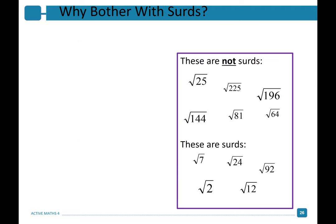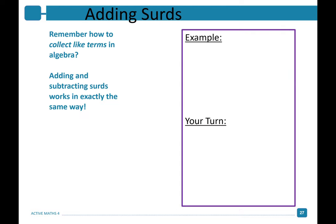Let's look at the following values. Root 25, root 144, square root of 81, square root of 64, the square root of 196 and the square root of 225 are not SURDs — these are all called perfect squares, as all of them can be written as a whole number. Whereas root 7, root 24, and root 92 are all SURDs as they are irrational numbers.